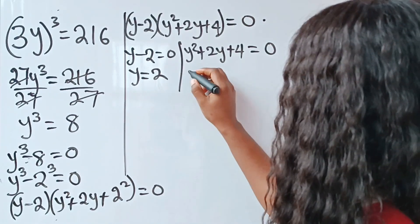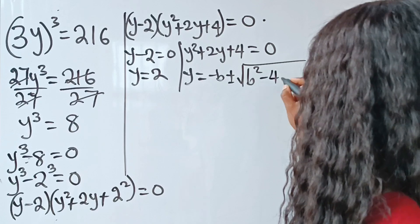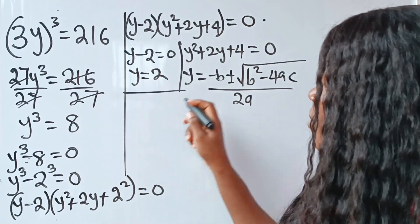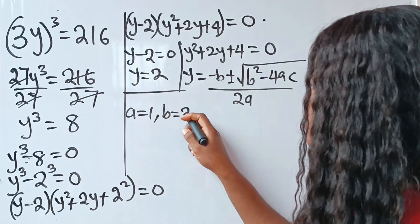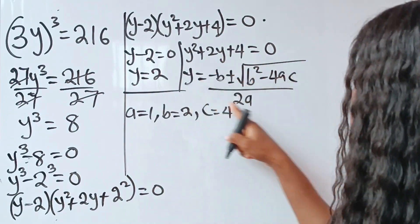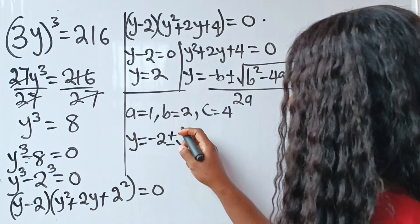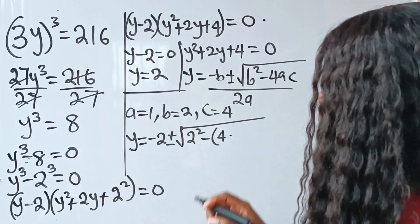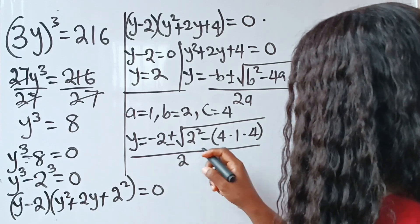The quadratic formula states that y equals minus b plus or minus the square root of b² minus 4ac, divided by 2a. Here a equals 1 (coefficient of y²), b equals 2 (coefficient of y), and c equals 4 (the constant). Substituting: y equals minus 2 plus or minus the square root of 2² minus 4 times 1 times 4, all divided by 2 times 1.